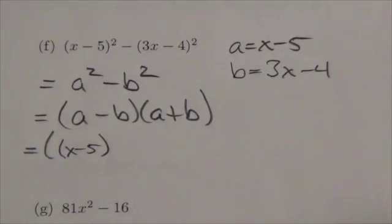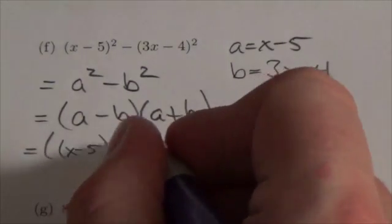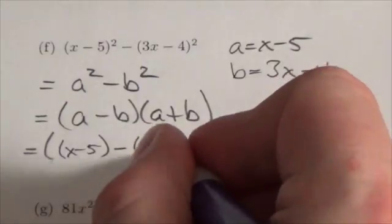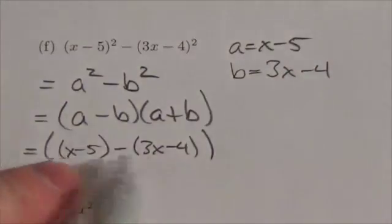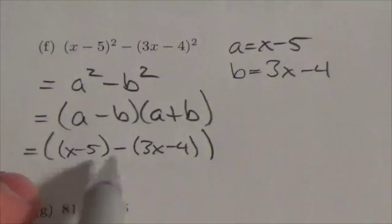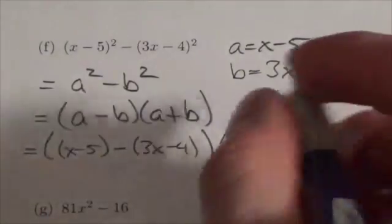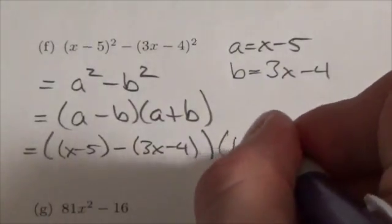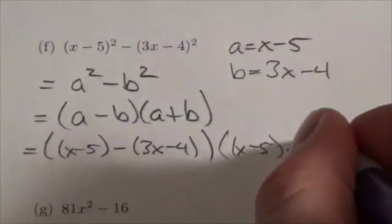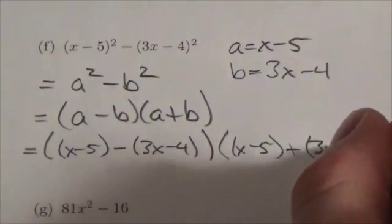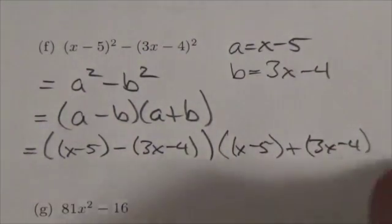Minus, in brackets, b is 3x minus 4. So right there that's that first factor there, a minus b. My second one here in brackets is going to be x minus 5, plus, and then in brackets, 3x minus 4. Now I might be running—nope, I got room there.